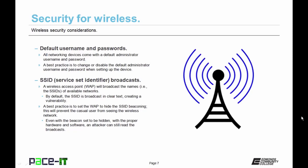Then there are SSID broadcasts — a wireless access point will broadcast the names of available networks. By default, the SSID is broadcast in clear text, creating a vulnerability. A best practice is to set the WAP to hide the SSID beaconing, which will prevent the casual user from seeing the wireless network. But even with the beacon set to be hidden, with the proper hardware and software, an attacker can still read those broadcasts — so that in itself will not stop a determined hacker.